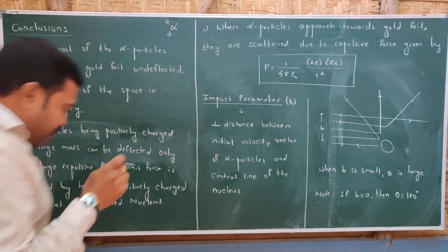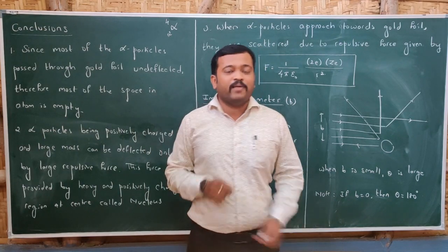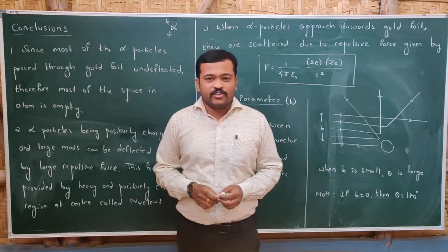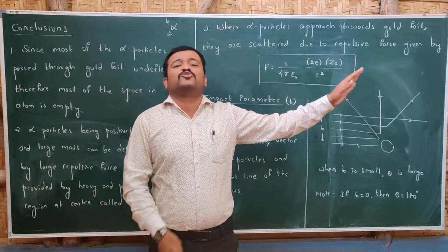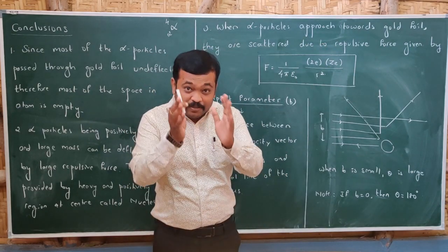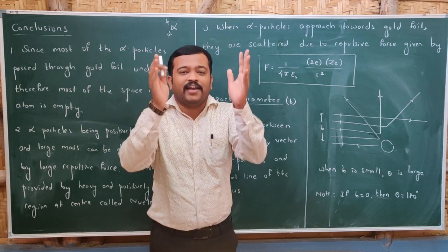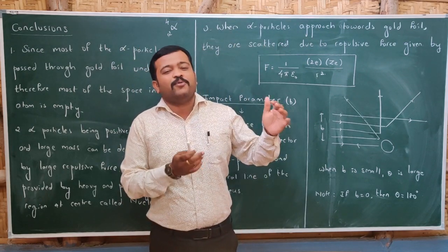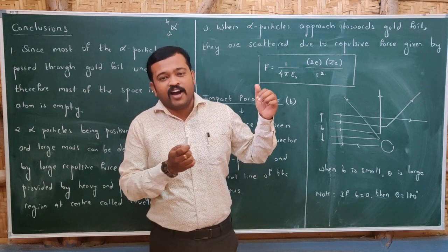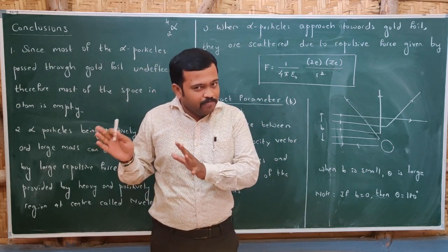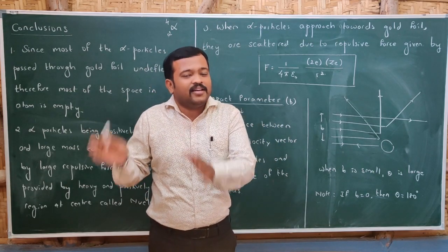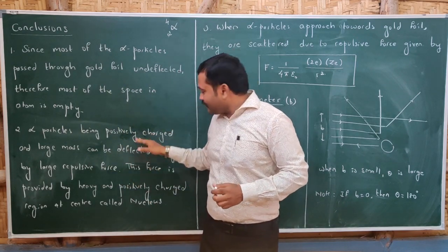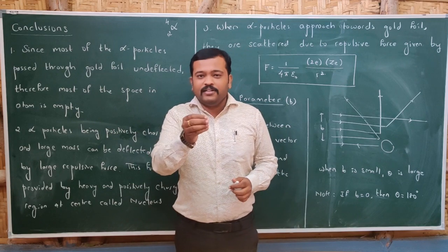Now let us study the conclusions of the alpha particle scattering experiment. The first conclusion is: since most of the alpha particles passed through the gold foil undeflected, it means that most of the space in an atom must be empty. Since 99.86% of the alpha particles were undeflected, about 99% of the space in an atom must be empty.